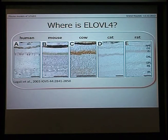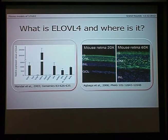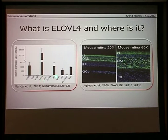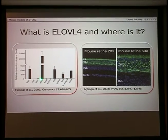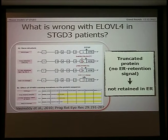All species that have been looked at contain ELOVL4 in the retina, specifically in the photoreceptor cell layer. The green fluorescence in this mouse image shows where ELOVL4 can be found — in the photoreceptor cell layer. Outside the retina, it can also be found in the brain, skin, lens, and testes, but at a much lower level of expression. This expression in the skin will become important later.